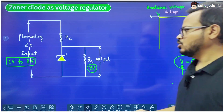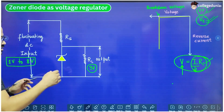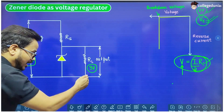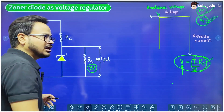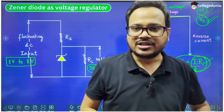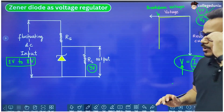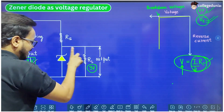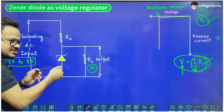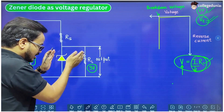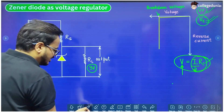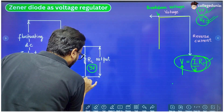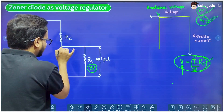So it will be damaged. The requirement is that if it is connected to a fluctuating DC input, we still need to have a fixed, constant output of 3V across this LED bulb. What we will do is connect a P-N junction, that is a Zener diode, in reverse biased mode across this one in parallel. We can clearly see that it is a parallel connection.